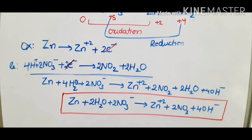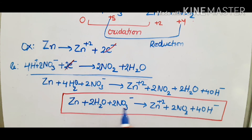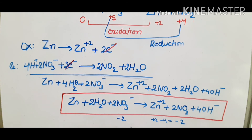Check the number of atoms: zinc is 1 on each side. Hydrogens: 4H from hydroxyl on each side. Oxygens: 2 + 6 = 8 on the left, and 4 + 4 = 8 on the right. Charge: minus 2 on the left; plus 2 minus 4 = minus 2 on the right. Charge is also equal. So check atoms, oxygens, hydrogens, and charge — this is the complete balanced redox reaction in basic medium.